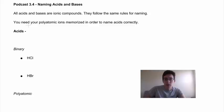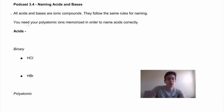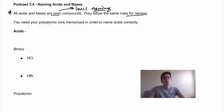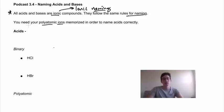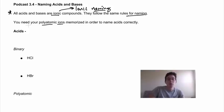Podcast 3.4: the naming of acids and bases. All acids and bases are ionic compounds, so we follow ionic naming rules. In order to name acids and bases, you have to have your polyatomic ions memorized, and we'll show you why — it changes the naming schema.